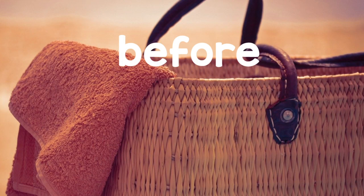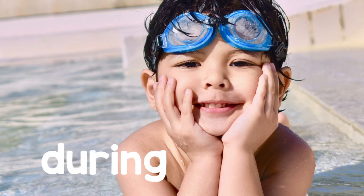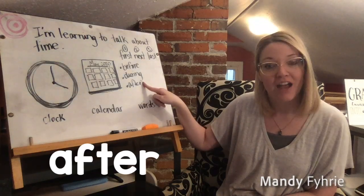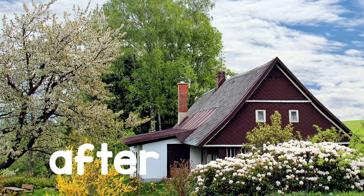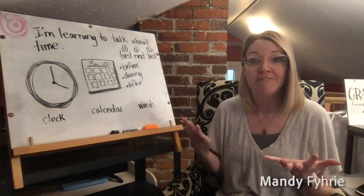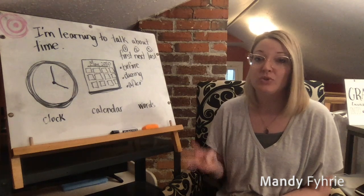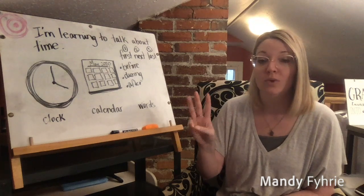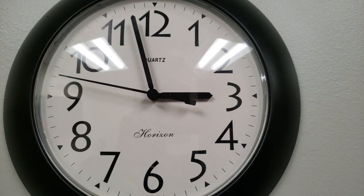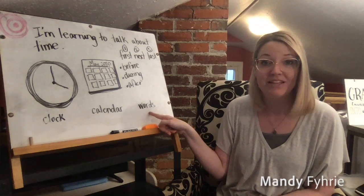For example: before I go to the swimming pool, I need to pack a swimsuit. During my trip to the swimming pool, I swam around. After I went to the swimming pool, I put my swimsuit away and went home. Those are all words we could use to describe events in history. So those are three ways we can measure time: using a clock, using a calendar, and using our words.